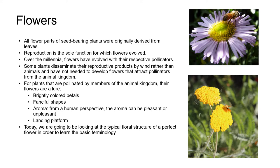For plants that are pollinated by members of the animal kingdom, their flowers are a lure — they have brightly colored petals, maybe fanciful shapes, fragrance, or a stink. All of these are signals to their respective pollinators that say, 'Hey, come on in.' Today we're going to be looking at the typical flower structure of a perfect flower in order to learn some of the basic terminology that will help us describe flowers and identify plants.